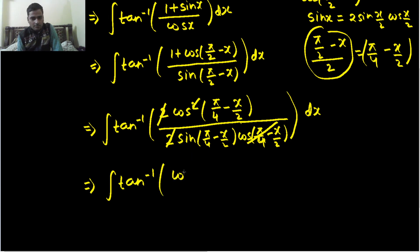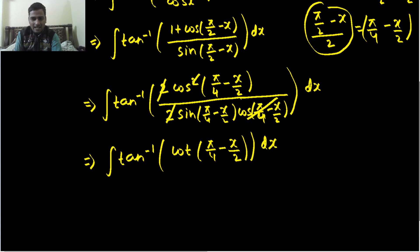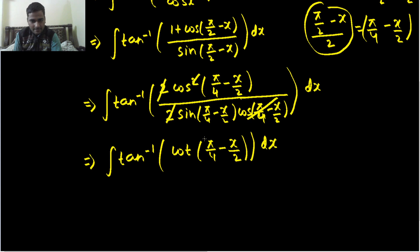Cos by sin is nothing but cot. Again, tan inverse of cot x, something like that. Again, we don't have a formula. So I think I have chosen the complex path for solving this question but let's deal it like this only. The simpler process we'll see next day. So again cot, we have to change in terms of tan so that tan inverse of tan x becomes x. We can write this as tan π/2 minus x.